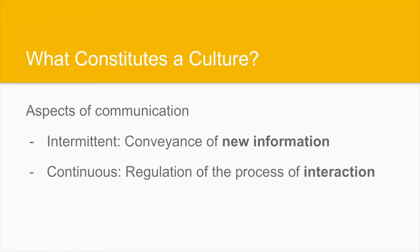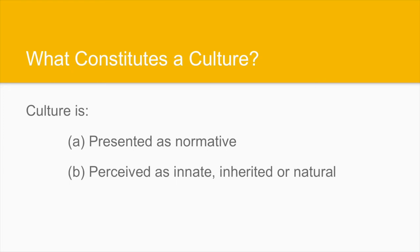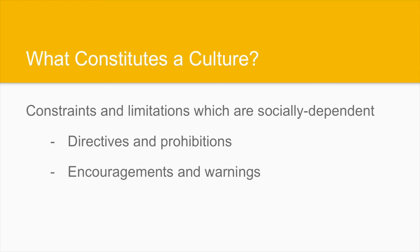It is possible to identify two different aspects of communication which are not incompatible but necessary in coexistence. The first is intermittent — the conveyance of new information, which cannot be a continuous process, otherwise we would become, for lack of a better word, infoxicated. The second is a continuous process which regulates the interaction between speakers and maintains an open channel of communication and informational exchange. We must also take into account that culture is presented as normative while in fact it's a construct, and perceived as innate or natural, while in fact it is socially construed.